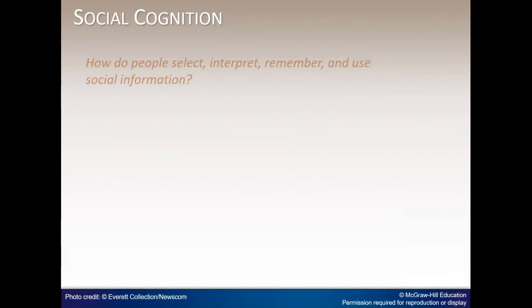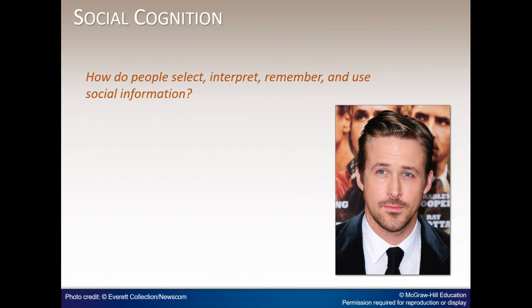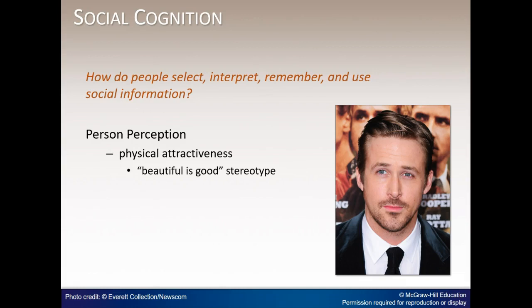Social cognition is an area of psychology that examines how people select, interpret, remember, and use social information. Person perception refers to the processes by which we use social stimuli to form impressions of others. People judge others by their looks — the face can tell a lot about someone to a social perceiver. Research suggests we process information about trustworthiness and dominance conveyed in faces automatically, without conscious effort. Attractive individuals are thought to be better adjusted, socially skilled, friendly, likable, extroverted, and more likely to achieve superior job performance. Research has shown that even three-to-six-month-old infants preferred to look at attractive faces. In a self-fulfilling prophecy, individuals' expectations cause them to act in ways that make those expectations come true. Rosenthal and Jacobson in 1968 found that teachers' expectations for students can influence students' actual performance.